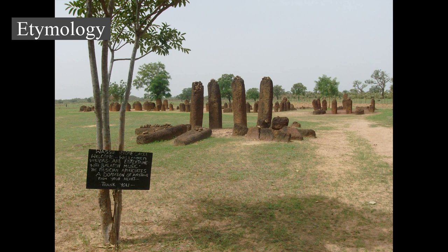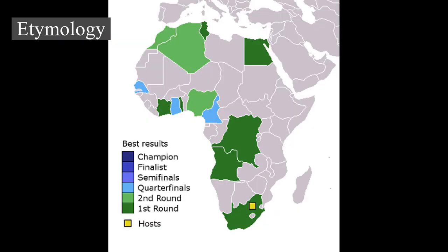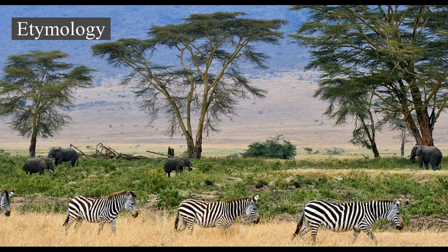According to the Romans, Africa lies to the west of Egypt, while Asia was used to refer to Anatolia and lands to the east. A definite line was drawn between the two continents by the geographer Ptolemy (85–165 AD), indicating Alexandria along the prime meridian and making the Isthmus of Suez and the Red Sea the boundary between Asia and Africa. As Europeans came to understand the real extent of the continent, the idea of Africa expanded with their knowledge.